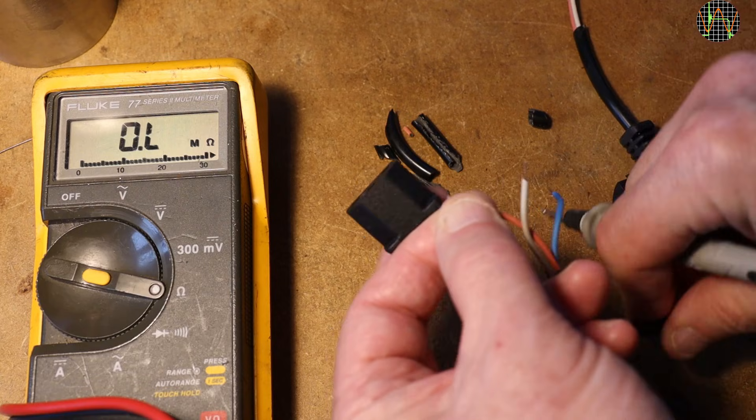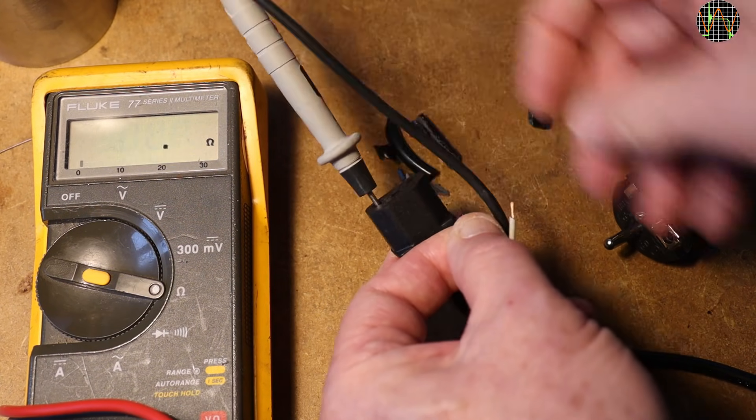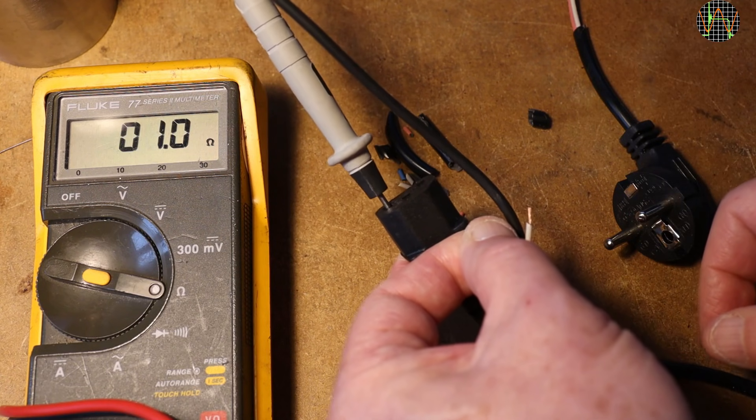Which explains the resistance of a single core of this roughly 1 meter long cable: about 1 ohm, which is a lot.